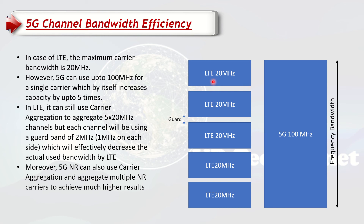In LTE, every 20 megahertz channel needs a guard band on both sides — 1 megahertz on each side. So every channel wastes 2 megahertz in guard band, leaving only 18 megahertz usable. In short, if you have 100 megahertz and use LTE with 5CC carrier aggregation, you can actually only use 90 megahertz while 10 megahertz is wasted as guard band.